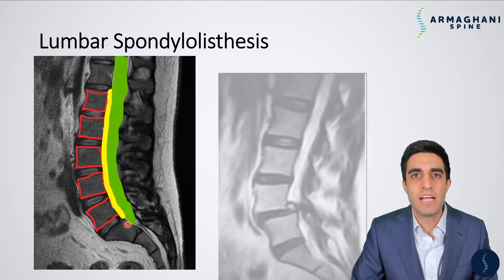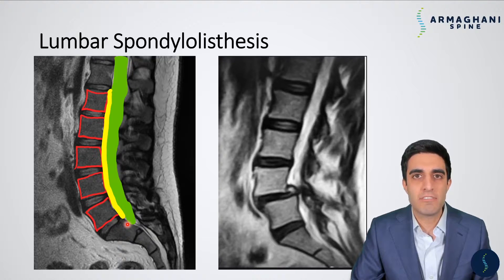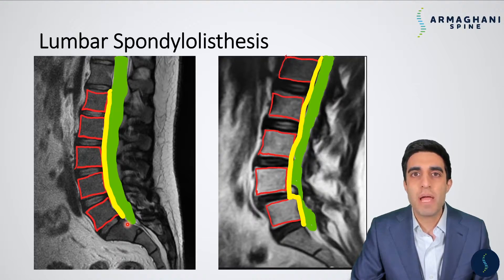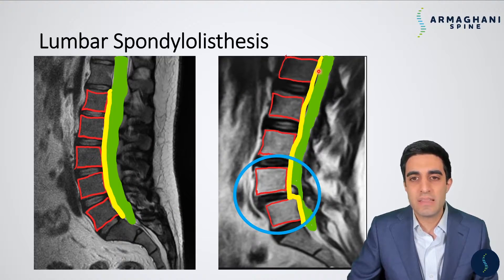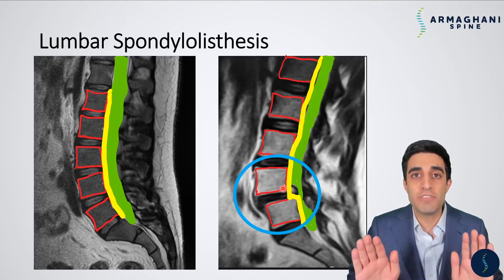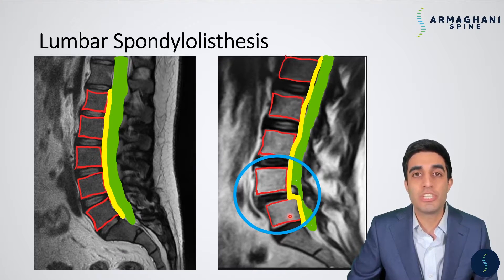Now let's take a look at an abnormal spine — can you spot the differences? Here are our vertebral bodies. The thecal sac is in green, and now let's take a look at the position of the back of the vertebral bodies with that yellow line. It's highlighted here in blue. You can see that the back of these bones are all lined up perfectly until we get to this bone and then it's shifted forward. The L4 bone, or lumbar 4 vertebrae, is shifted forward in relation to L5. That creates some disc bulging here and pinching of the thecal sac in this area.